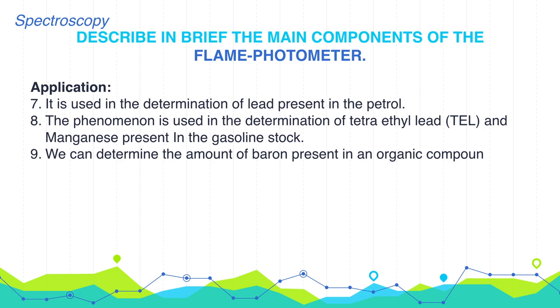Detection of sodium, potassium, calcium, aluminum, iron, and cobalt present in biological fluids and tissues can be done with the help of flame photometry.